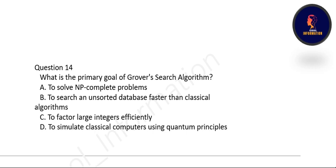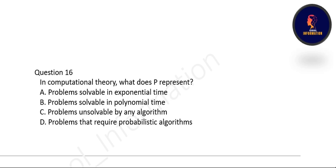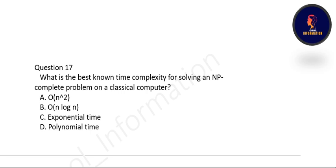Next question: what is the primary goal of Grover's search algorithm? To search an unsorted database faster than a classical algorithm. Option B is correct. Next question: what is an NP-hard problem? A problem that is at least as hard as the hardest problem in NP. Option C is correct. Next question: in computational theory, what does P represent? P represents problems solvable in polynomial time. Option B is correct.